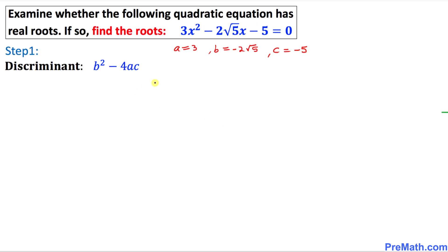Now we are going to figure out whether this given quadratic equation has real roots. For that, we will be finding the discriminant. The discriminant is b squared minus 4ac. Let's go ahead and find the value of the discriminant by substituting the values for a, b, and c.